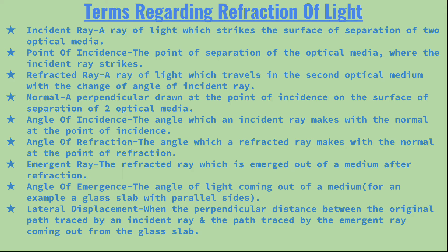The emergent ray is the refracted ray which emerges out of a medium after refraction. For example, in a glass slab with parallel sides, the ray coming out after refraction through both surfaces is the emergent ray.